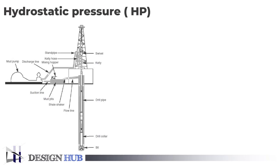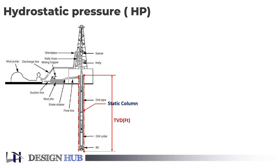For well understanding, first we discuss about terminology. This is the drilling rig, this is the wellbore. To calculate the hydrostatic pressure, we will consider this wellbore as a static column. This static column's total depth is called TVD — true vertical depth — and the whole column is filled with mud.